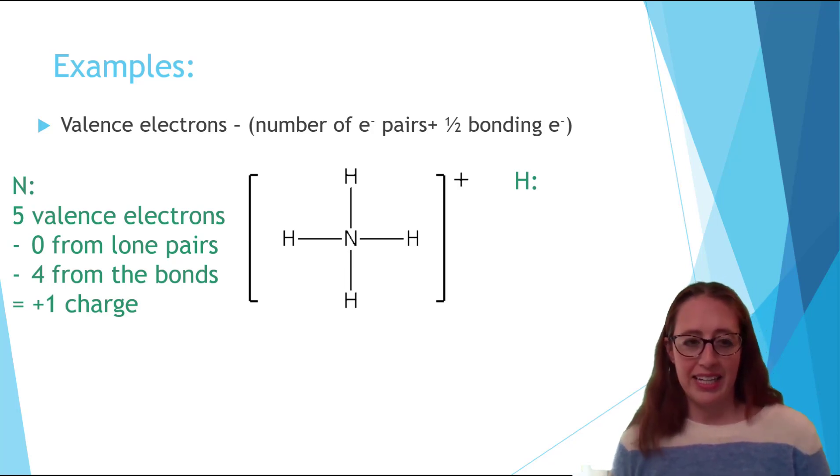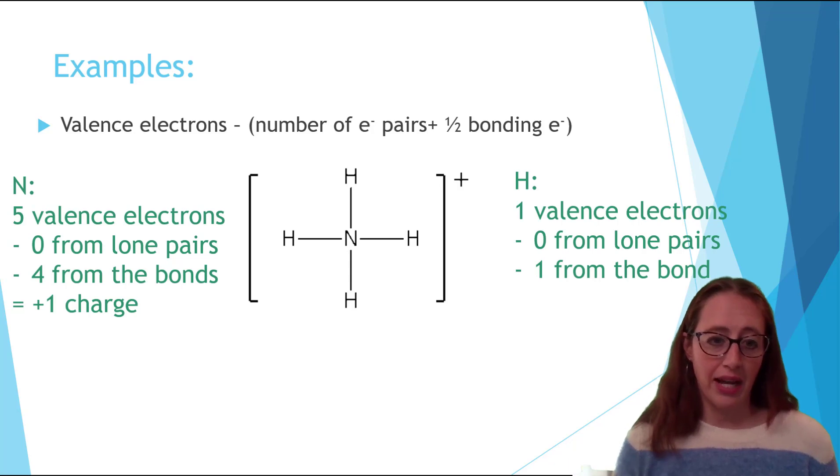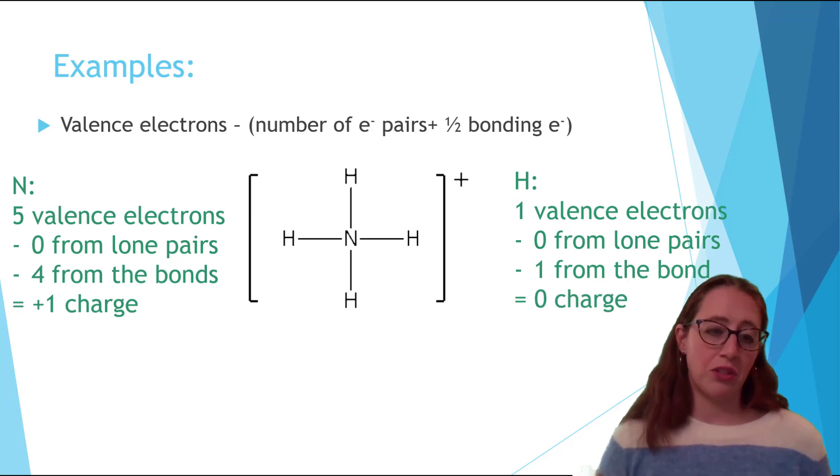Now pick a hydrogen, any hydrogen. Hydrogen has one valence electron and in the structure it also has one electron because it only gets one from the bond and it doesn't have any lone pairs. This gives a total charge of zero. And same thing here. We have a polyatomic ion. It has a plus one charge. And notice that the nitrogen plus all four hydrogens which are all zero add up to be plus one.